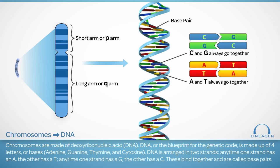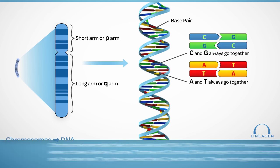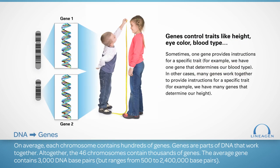The double helix fits together because A binds with T and G binds with C. These bound pairs are called base pairs. Altogether, the 46 chromosomes contain about 3 billion base pairs of DNA. On average, each chromosome contains hundreds of genes.